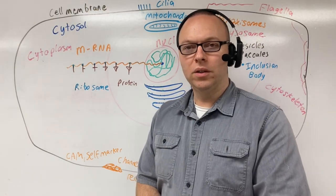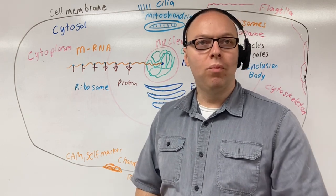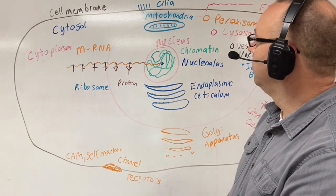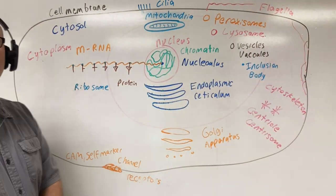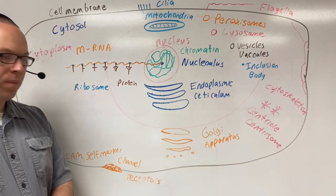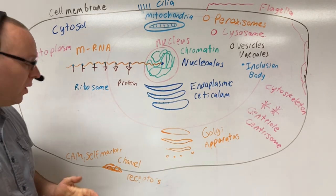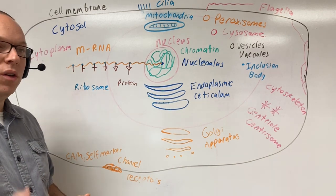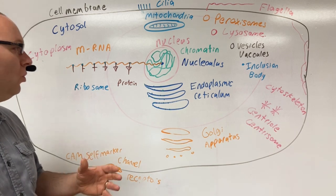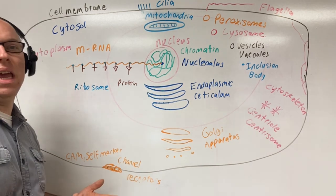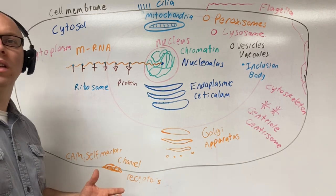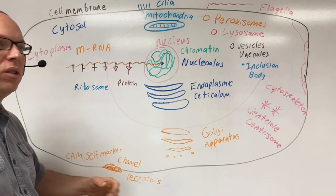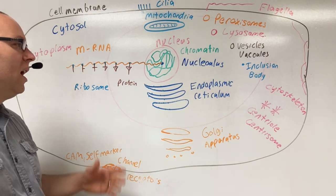Let's see what you've learned. You have a patient with type 2 diabetes — what is the problem on the cell? One of the answers is you're going to have a problem with the channels. Glucose wants to get inside the cell but can't because the glucose receptor is having an issue. Without the glucose receptor functioning, the glucose is going to be stuck outside the cell.